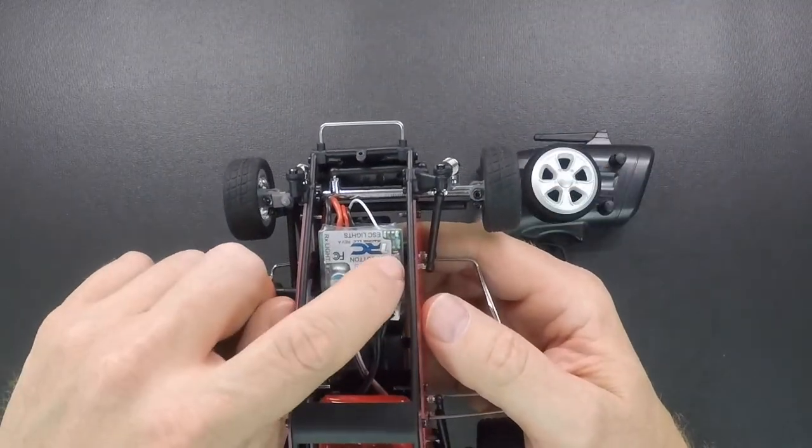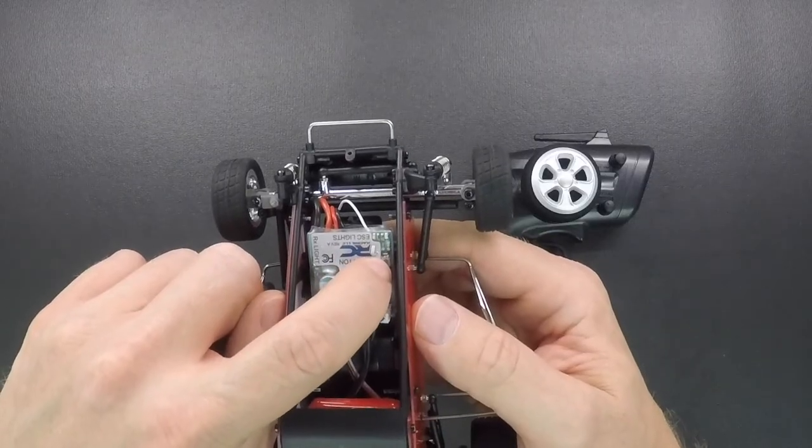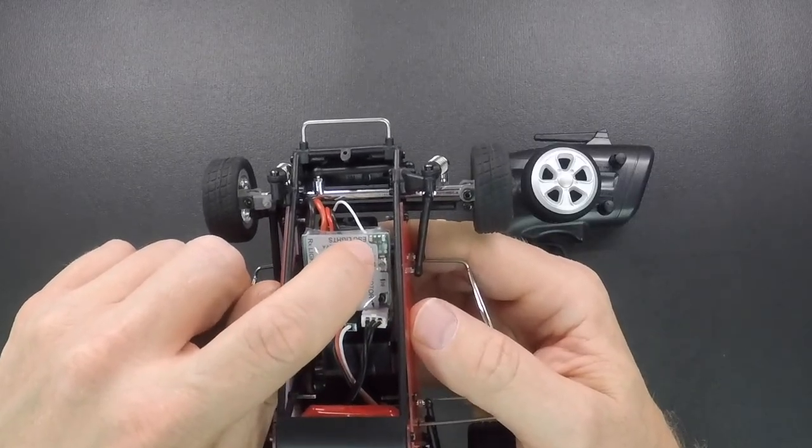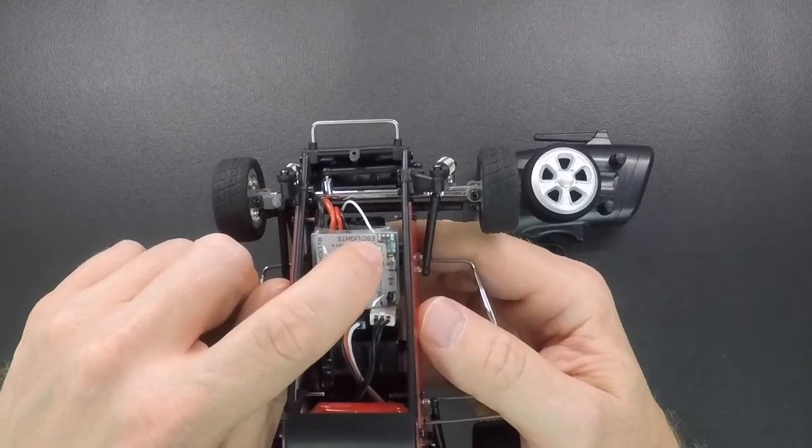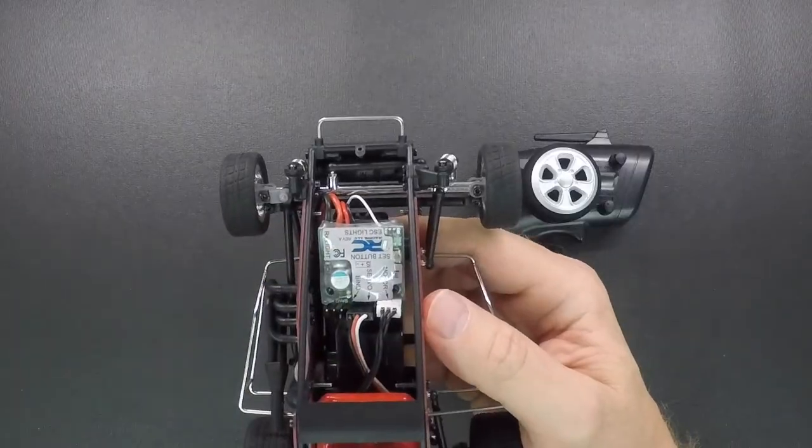So when we first turn this on, you hold the set button down, the red light's going to blink and you want to keep holding this set button down. Eventually you're going to see the green light blink. Once that green light blinks, each time that blinks, that's going to tell you what setting mode you're in.